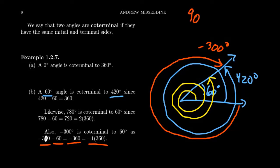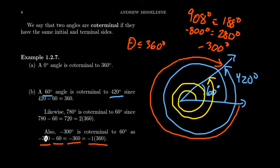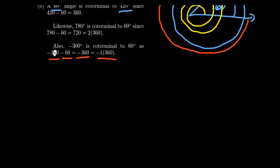For the most part, there's no reason to distinguish between coterminal angles — for example, 908 degrees versus 188 degrees, or negative 800 degrees versus 280 degrees. There are a few exceptions, which I'll point out along the way, but generally we will choose our angles to be between 0 degrees and 360 degrees. Sometimes we need an angle measure less than a single degree. One approach is to use a decimal proportion — for example, 15.34 degrees, meaning 15 degrees plus 34 one-hundredths of a degree.